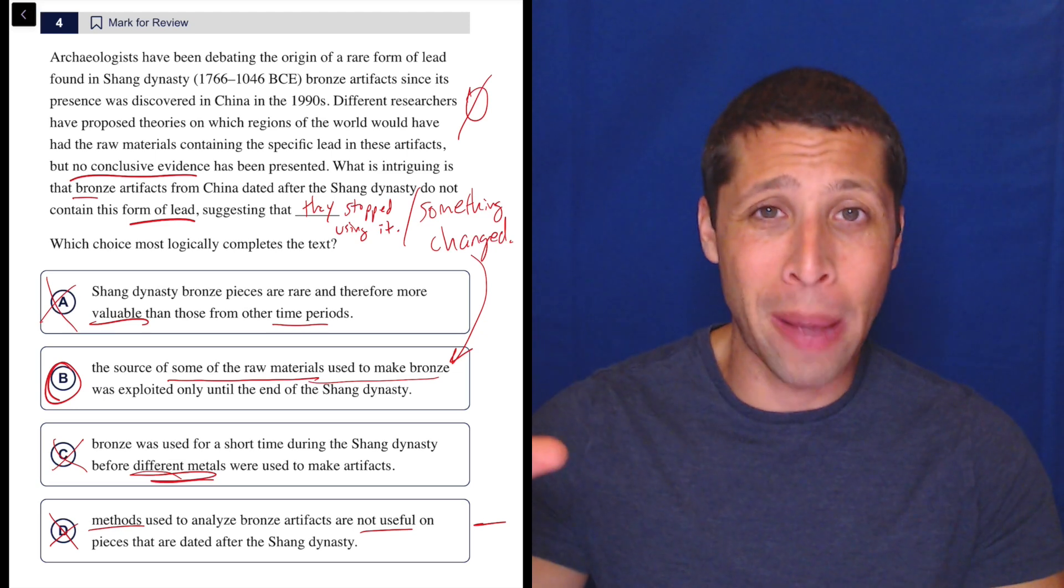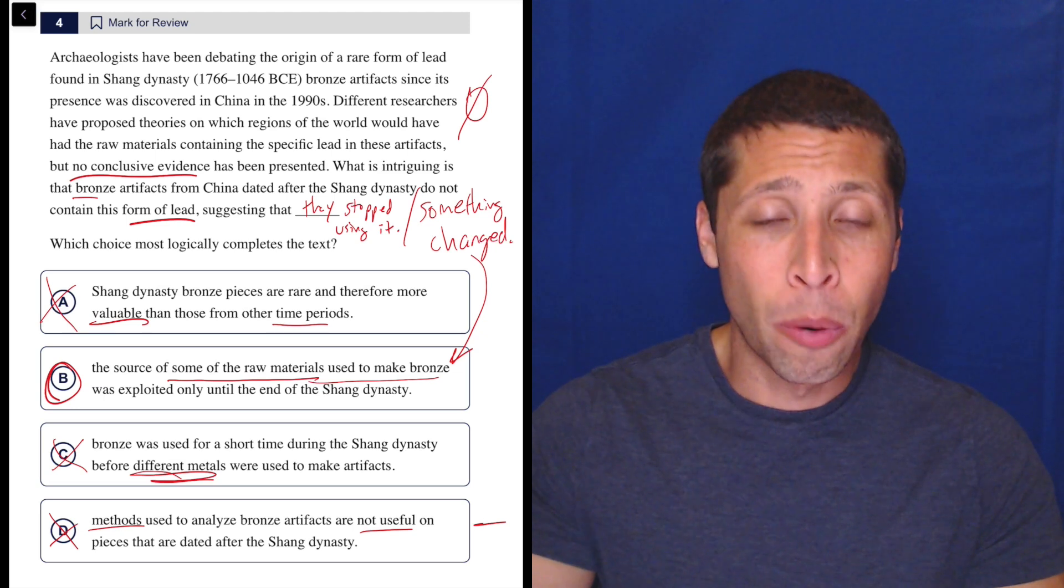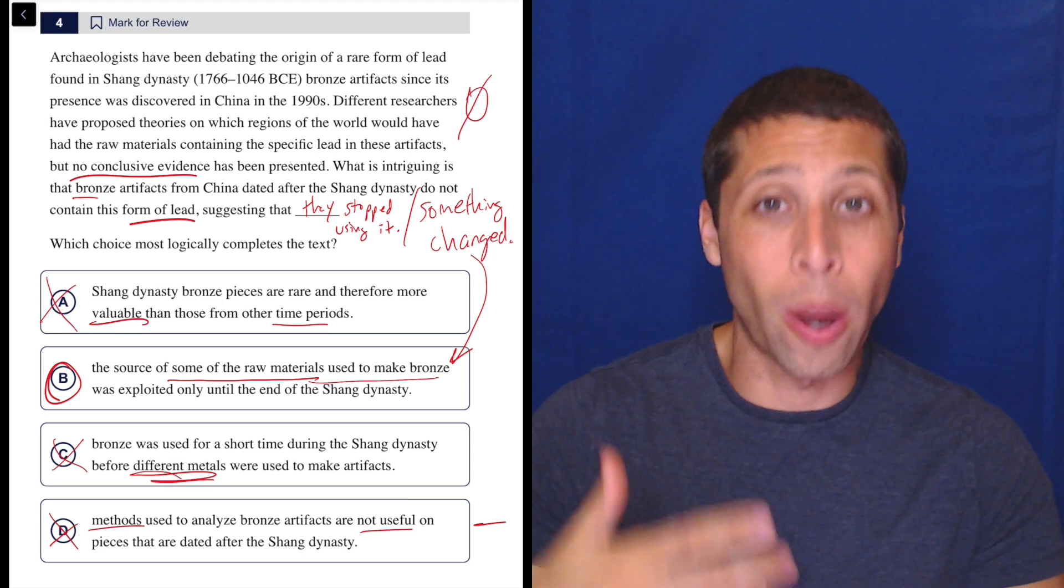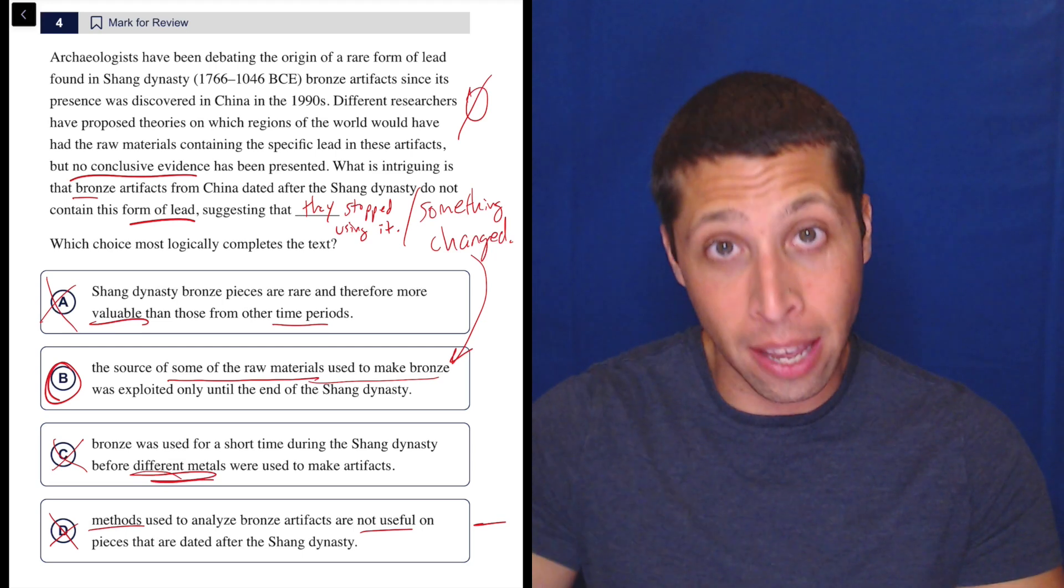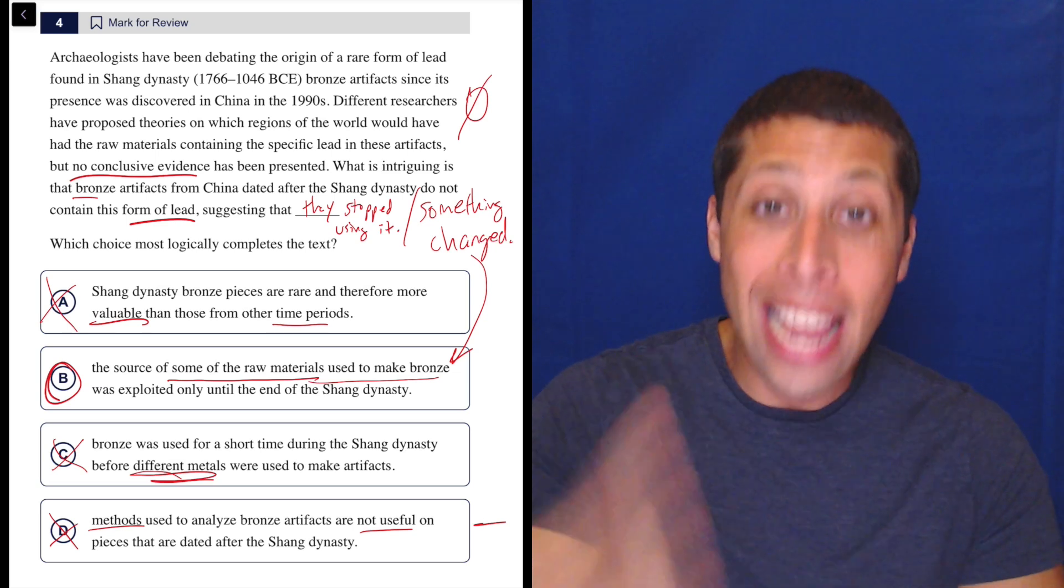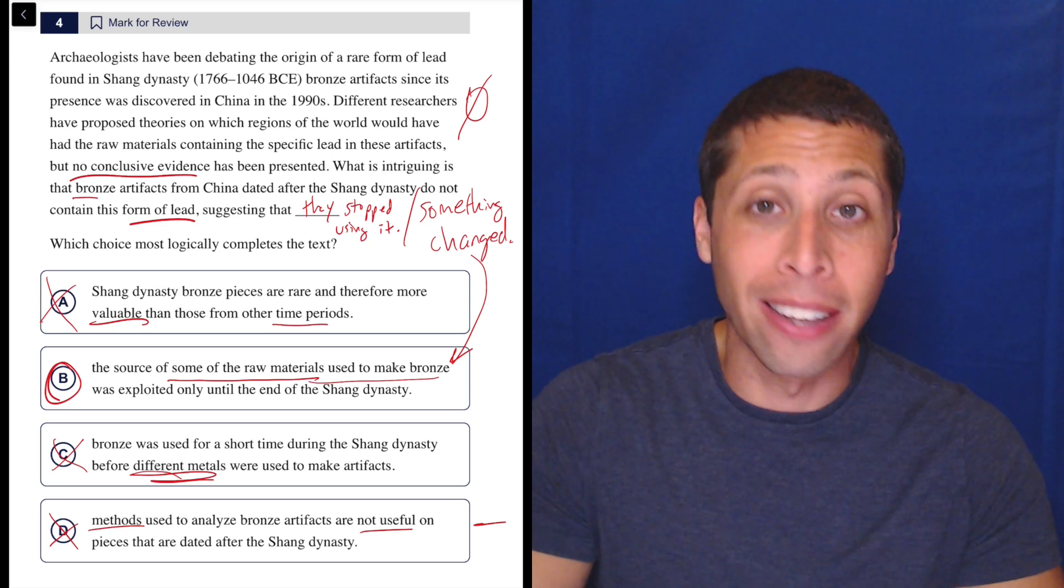They're going to take some word in the passage and use a synonym or some other phrase to talk about it. That's why you focus on verbs. That's why you focus on descriptive words, adjectives, because what they say about the thing is more important than the way they name the thing. So I didn't even notice it until I started talking about it. But yeah, B is definitely it.